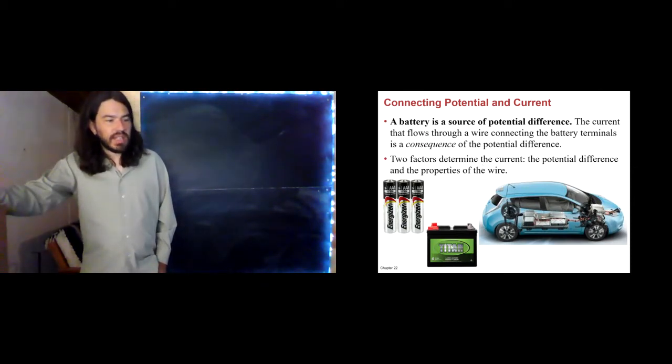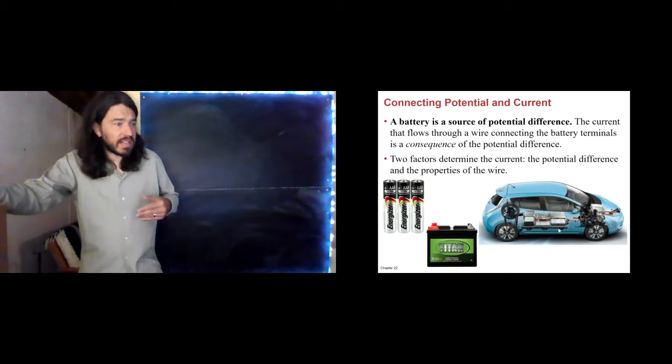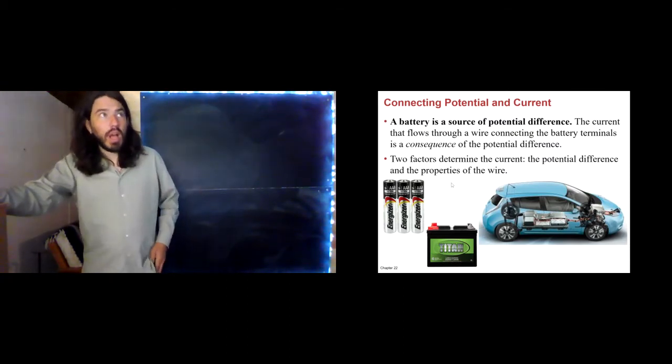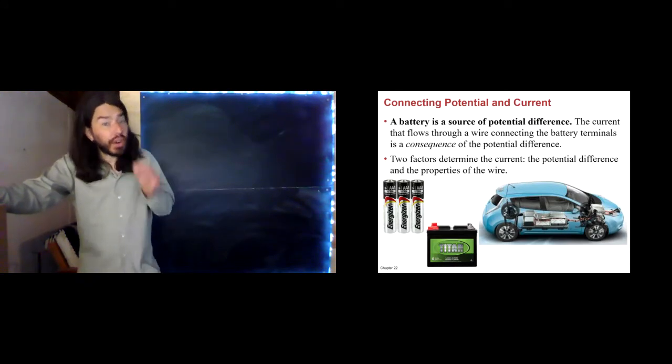So, again, a battery is a source of potential difference. Here are three different types of battery. This is an alkaline battery, a lead-acid battery, and a lithium-ion battery. Different chemistry, same thing, in the sense that the battery is a source of potential. And it's not necessarily a source of constant current. Sometimes people will think that. But no, it is a source of constant potential. The current depends on what I hook up to the battery.